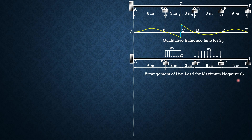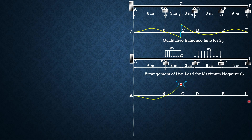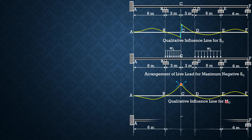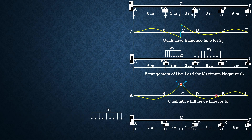And finally, for maximum moment at C, the qualitative influence line would look like this as shown. Therefore, to maximize the positive moment at C, we arrange the live load in such a way that it is over BCD and over EF, as shown in the figure.